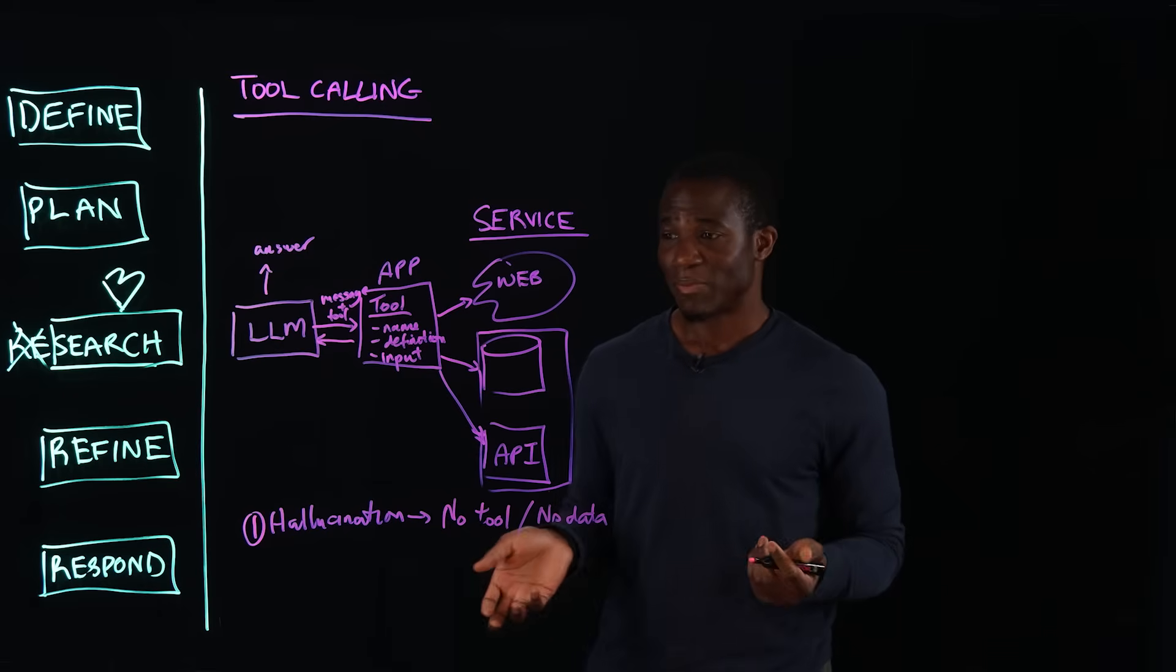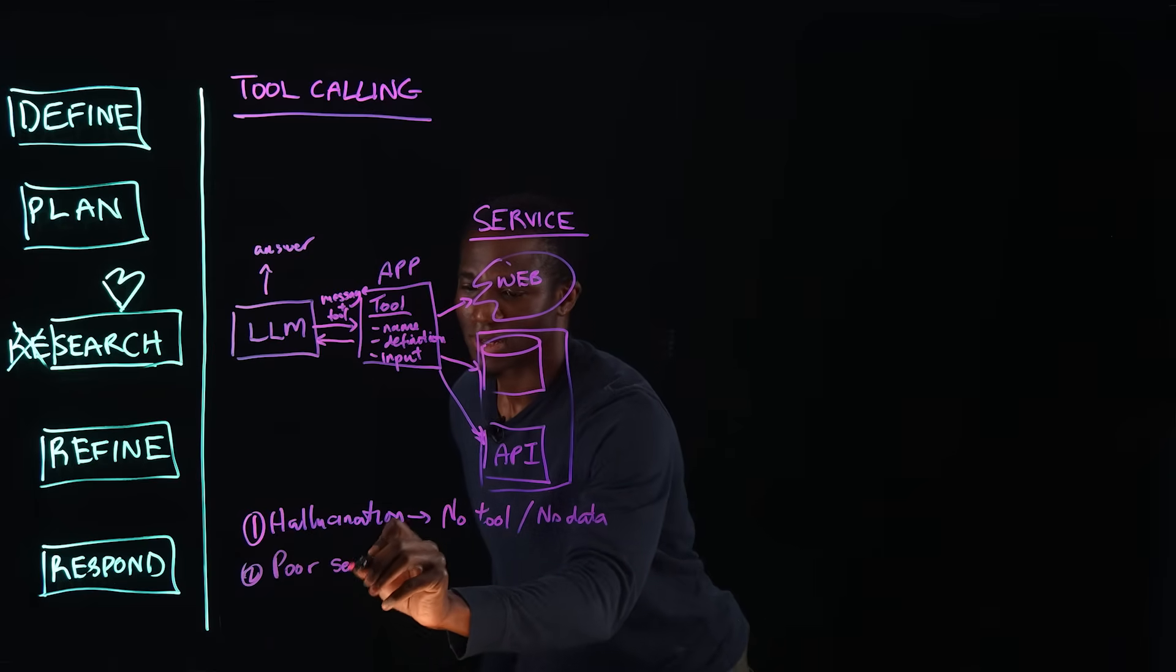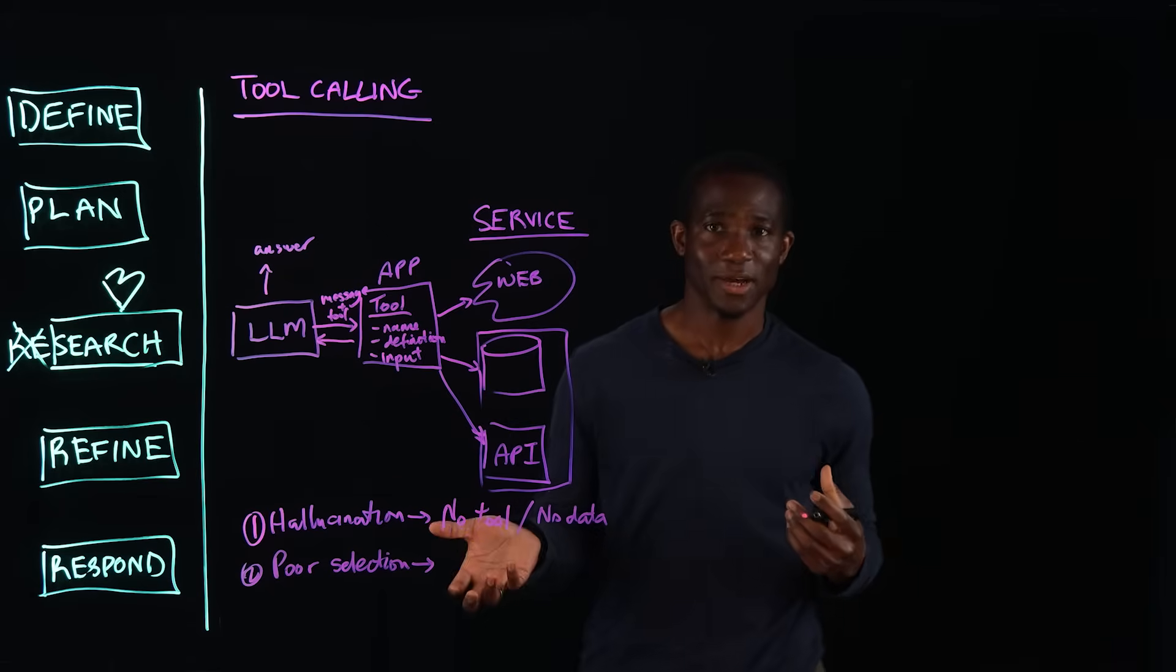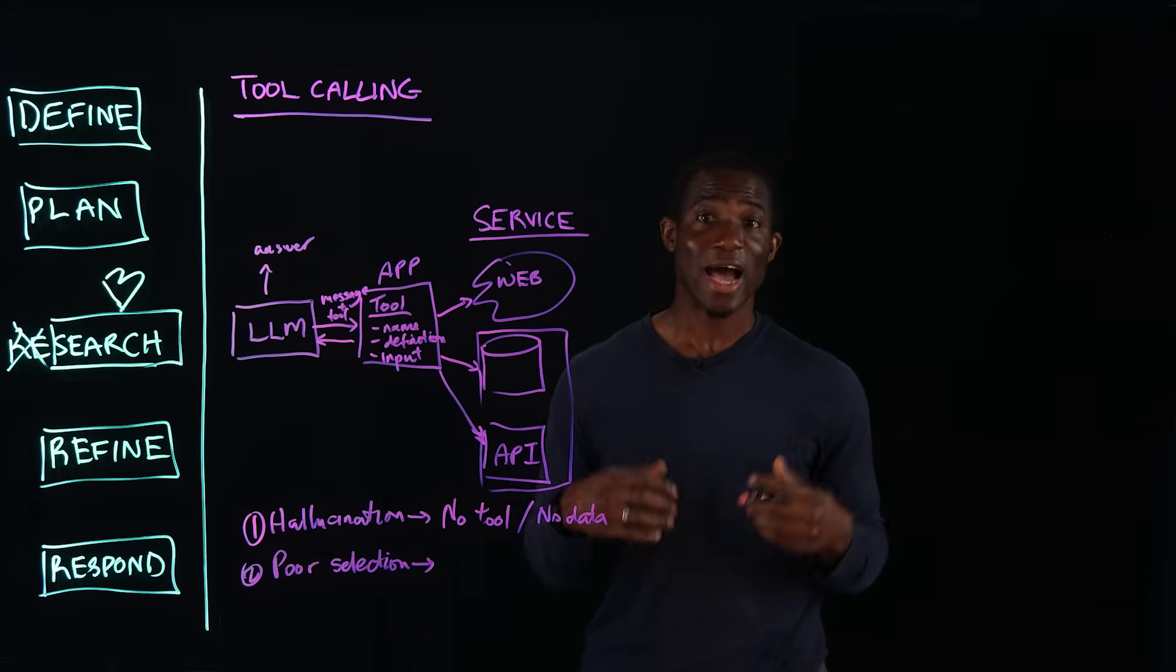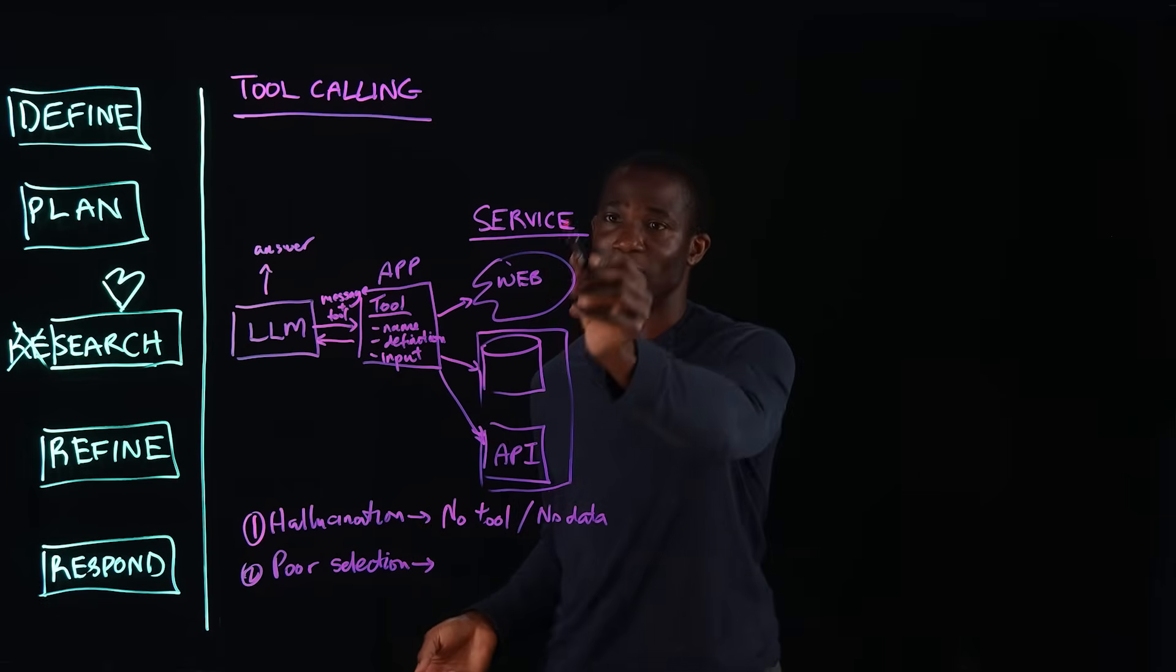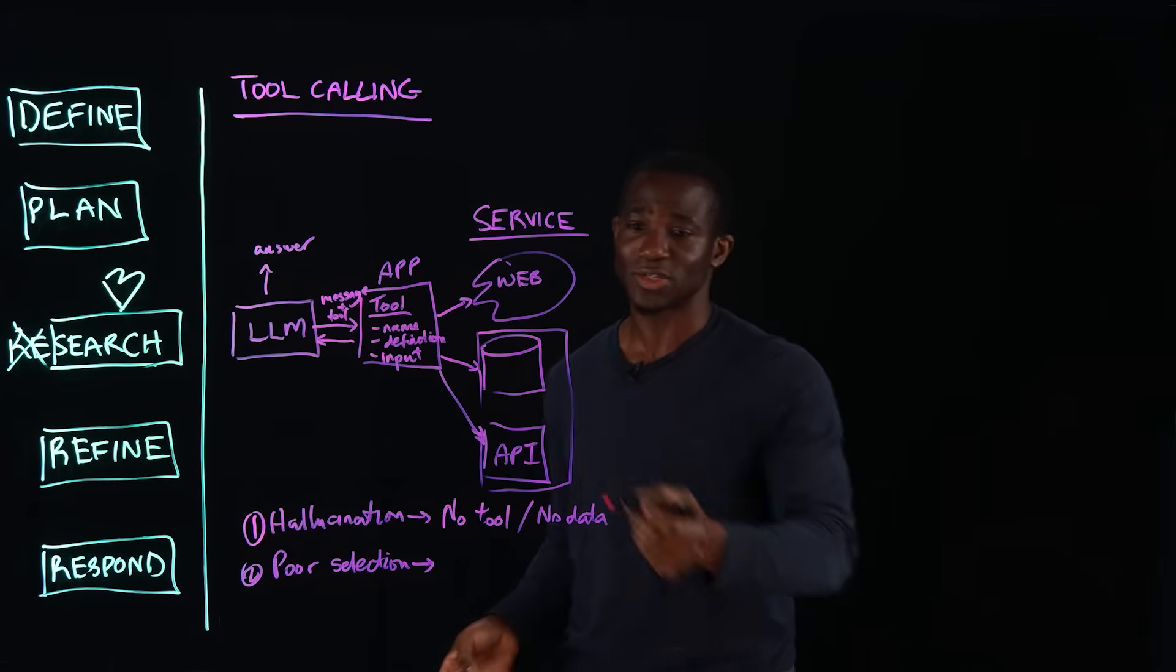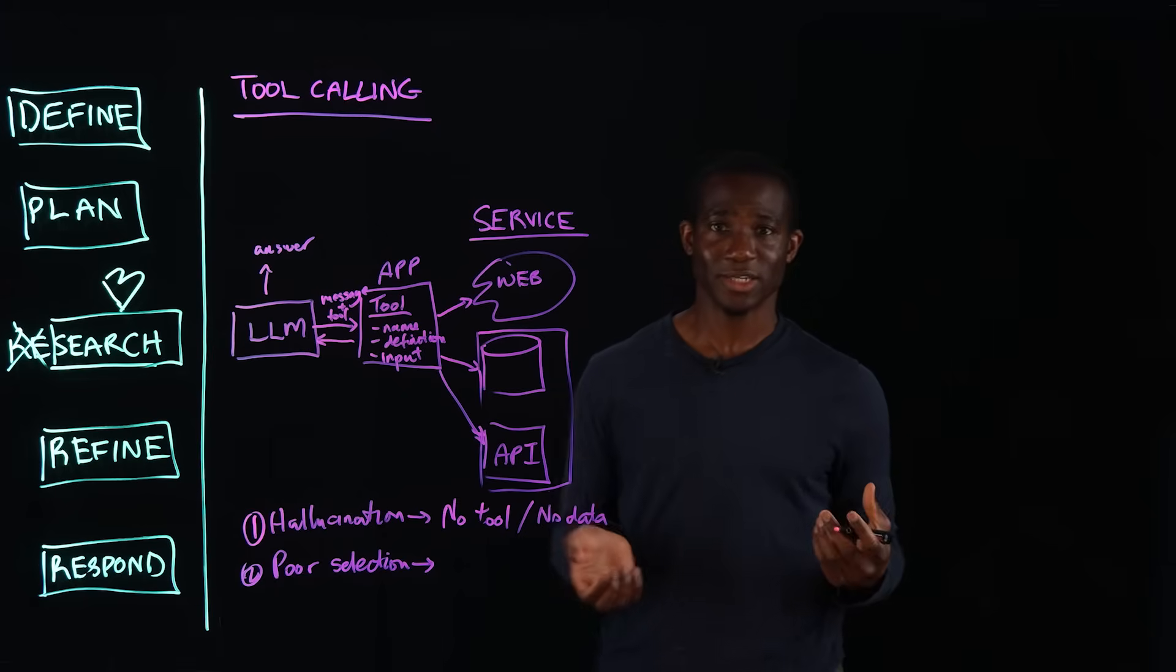The next thing that could happen is what I like to call poor selection. This may also be a function of the LLM where some LLMs are better than others at function calling. And so, the LLM might actually choose the wrong tool for a particular query. So, it may go to the web in order to fetch information when, actually, it should have gone to a database or a search API for a particular query.